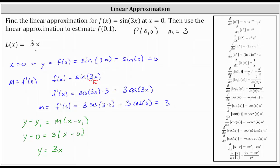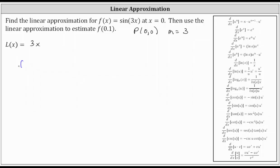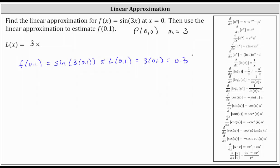Now we're asked to use this linear approximation to estimate f of 0.1. The idea here is that f of 0.1, which is equal to the sine of three times 0.1, is going to be approximately equal to L of 0.1, which is equal to three times 0.1, or just 0.3. So using the linear approximation, f of 0.1, which is exactly equal to the sine of 0.3, is approximately equal to 0.3.